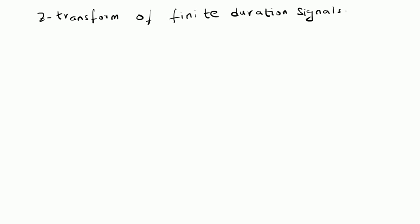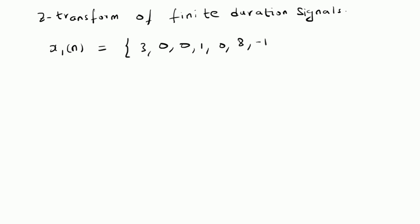Let us look at the first example given by x1 of n: {3, 0, 0, 1, 0, 8, -1, 4}. This is a finite duration signal with 0 at index position corresponding to 8. So n is equal to 0 here.